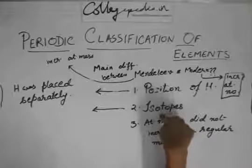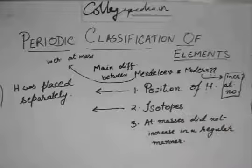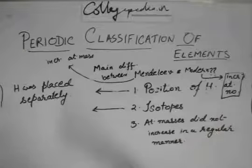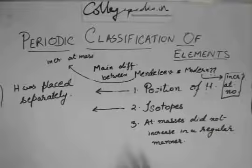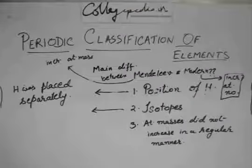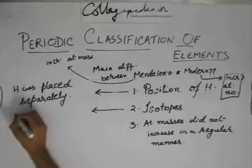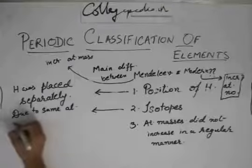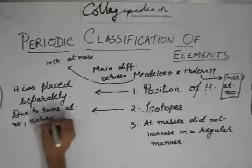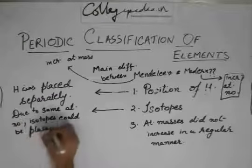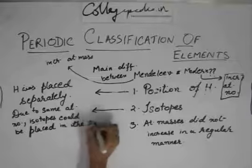How did it provide a solution to this shortcoming? Isotopes - they have different atomic masses, but they have the same atomic number. So since modern periodic table was based on increasing atomic number, isotopes could be simply placed in the same slot of the same atomic number, even if their masses are very different. So due to same atomic number, isotopes could be placed in the same slot.